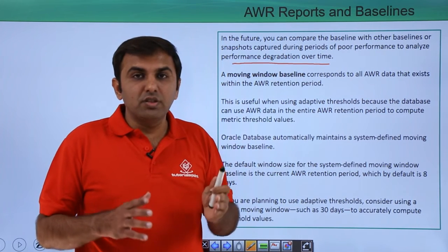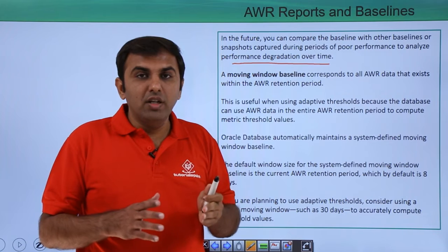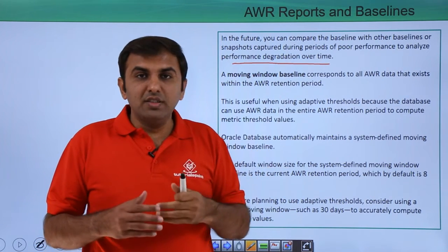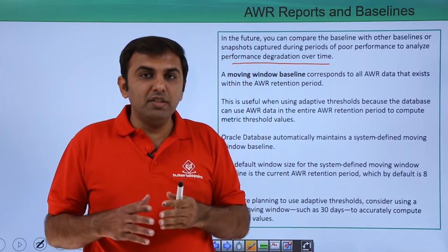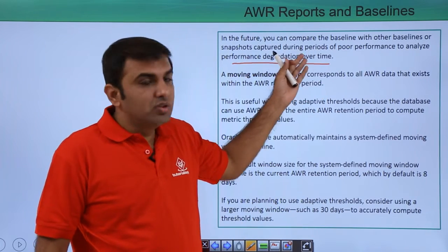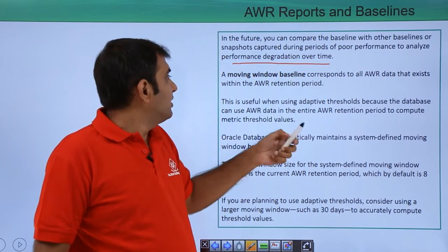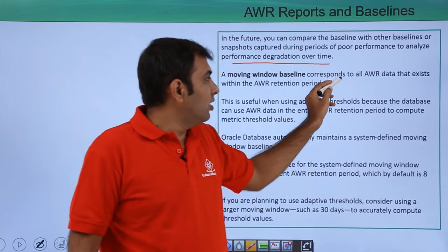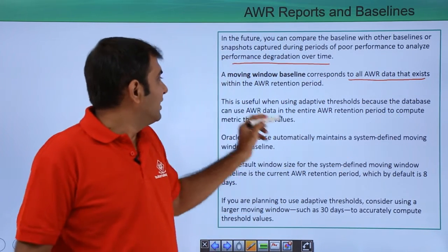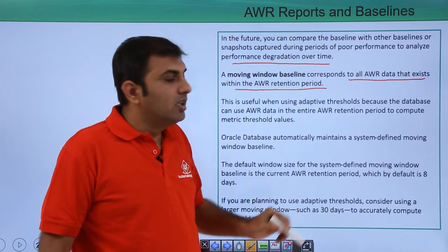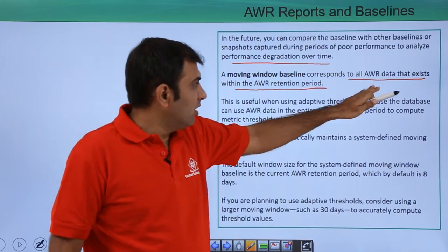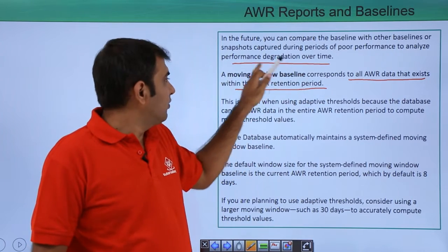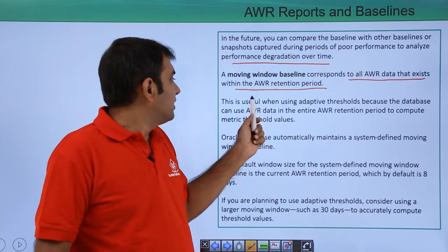Whenever a future issue occurs, you can compare the two reports — what was in my baseline report and what is the current state of my database. The next type is the moving window baseline, which corresponds to all AWR data that exists within the AWR retention period.